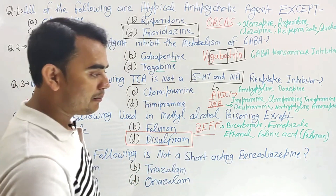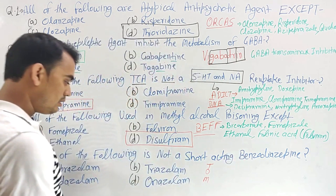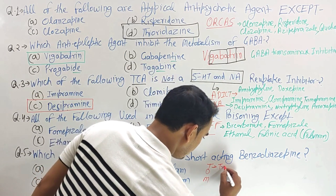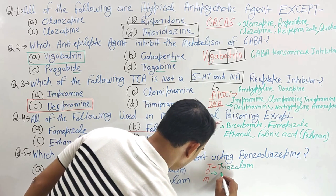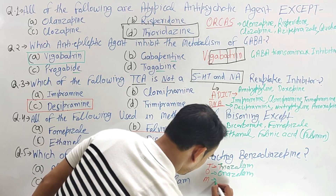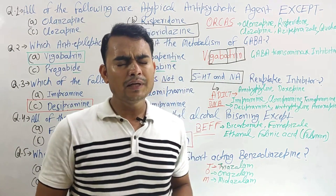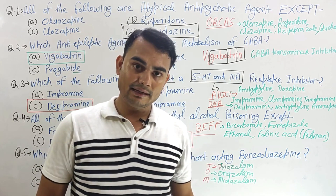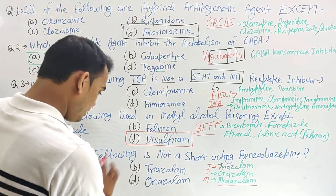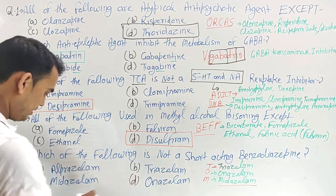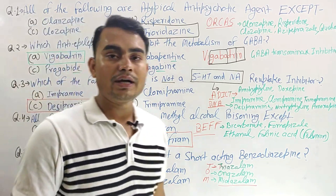Next question: which of the following is not a short-acting benzodiazepine? For short-acting benzodiazepines, just remember the word TOM. T for triazolam, O for oxazolam, and M for midazolam. These are the three short-acting benzodiazepines. The shortest-acting of all is midazolam. In the options, alprazolam is not in TOM — it is not a short-acting benzodiazepine. Triazolam, midazolam, oxazolam are all present. So alprazolam is a long-acting benzodiazepine and is the right answer.